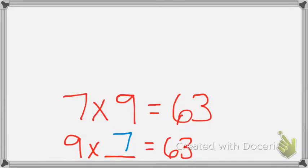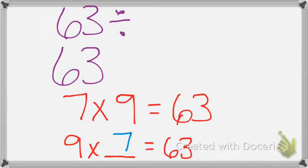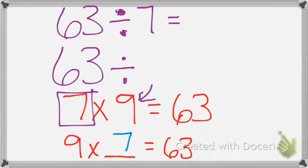Now I have 2 division sentences. Both division sentences have to start with the number 63, because division always starts with my larger number, kind of like subtraction. So 63 divided by 7 would give me my 9.